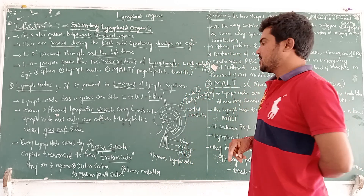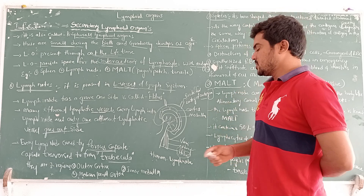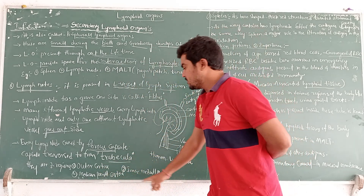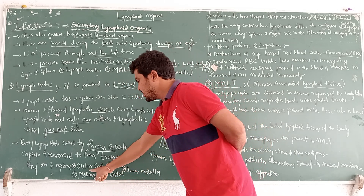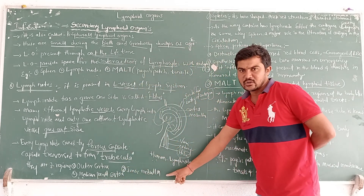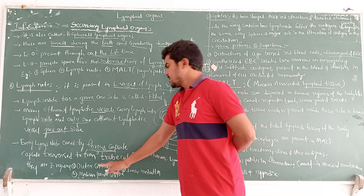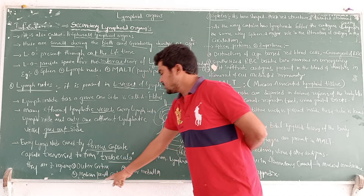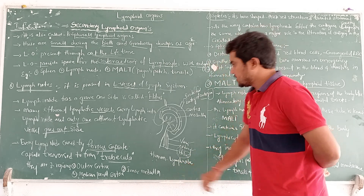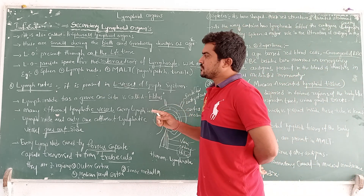Under the trabeculae, the lymph node has three regions. The first is the outer cortex. The second is the paracortex — also called the medullary parallel cortex. The third is the inner medulla. So, the three regions of the lymph node are: outer cortex, paracortex, and inner medullary region. This completes the first secondary lymphoid organ — the lymph node.